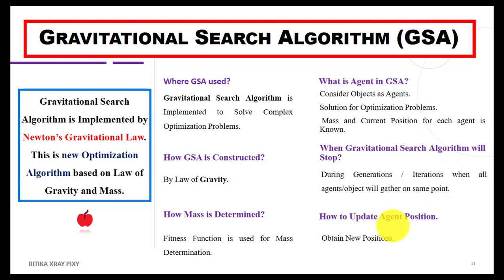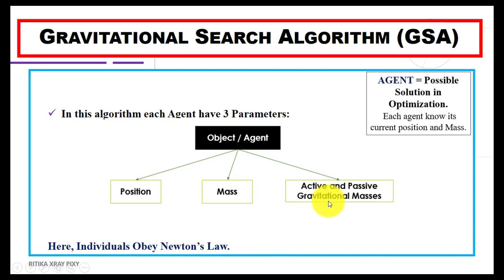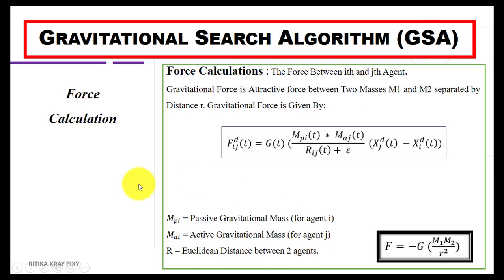How do we update position? By obtaining a new position. In this algorithm, each search agent has three parameters: position, mass, and active and passive gravitational masses. The agent is a possible solution in the optimization problem and knows its current position and mass. For mass calculation, for minimization we consider the minimum fitness value as best and the maximum as worst, and for maximization we consider the minimum value as worst and the maximum as best.